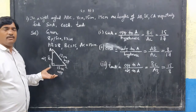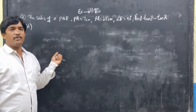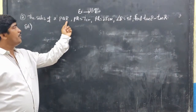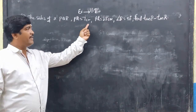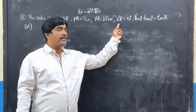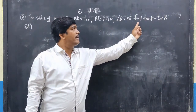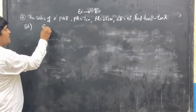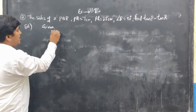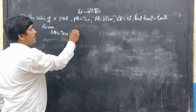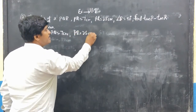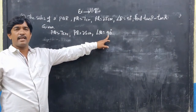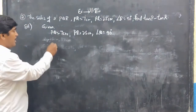Now we solve the second problem of exercise 11.1. The given question is: the sides of a right angle triangle PQR, where PQ = 7 cm, PR = 25 cm and angle Q = 90 degrees. Find tan P minus tan R. The right angle is present at Q, so I will draw the figure with Q at 90 degrees.